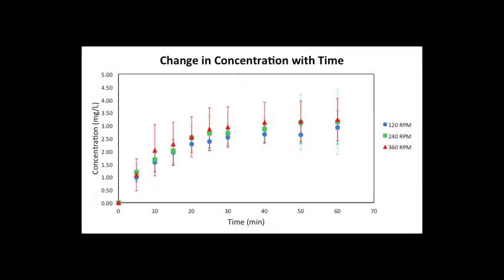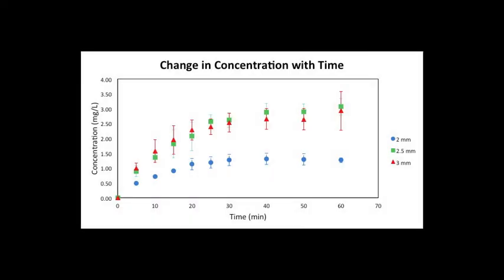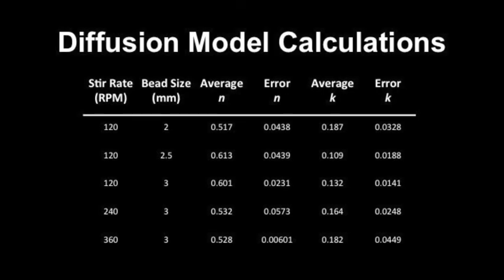Optical density values were converted to tartrazine concentrations using the calibration curve. This graph shows the data collected for concentration of tartrazine released over time with varying stir rates. The following graph shows the same axis for varying bead sizes. From this data, the fraction of tartrazine released from the dye over time, as well as the normalized rate of release, can be calculated.